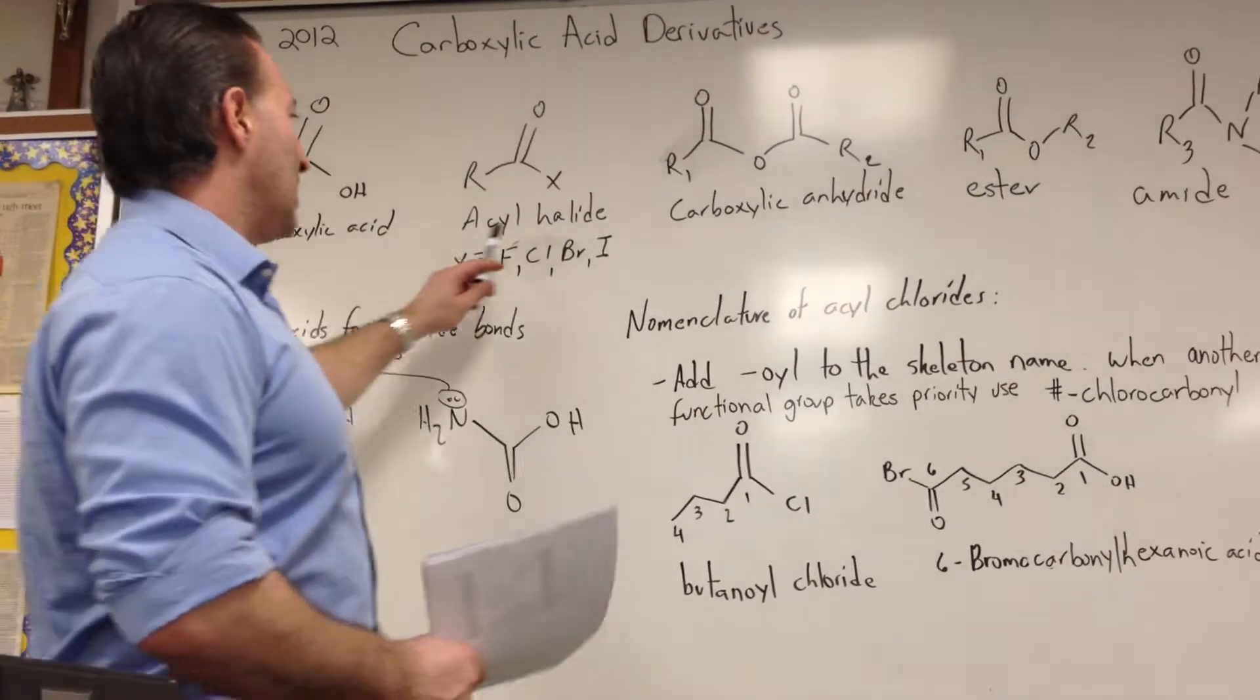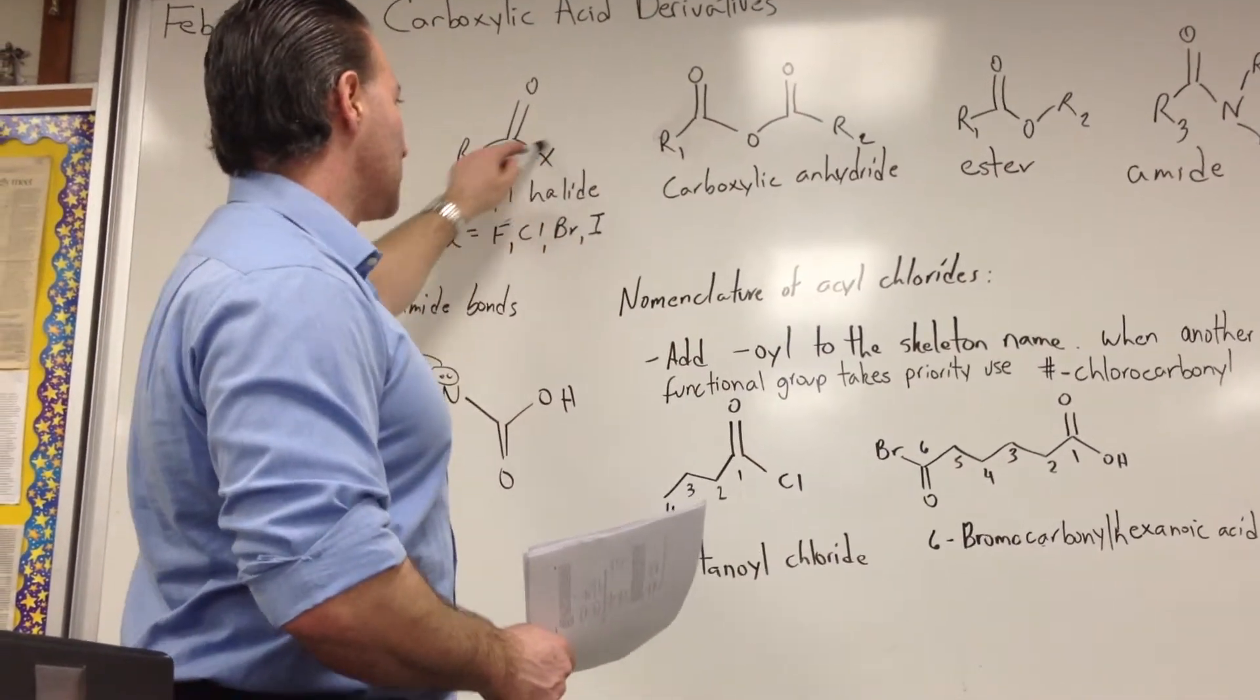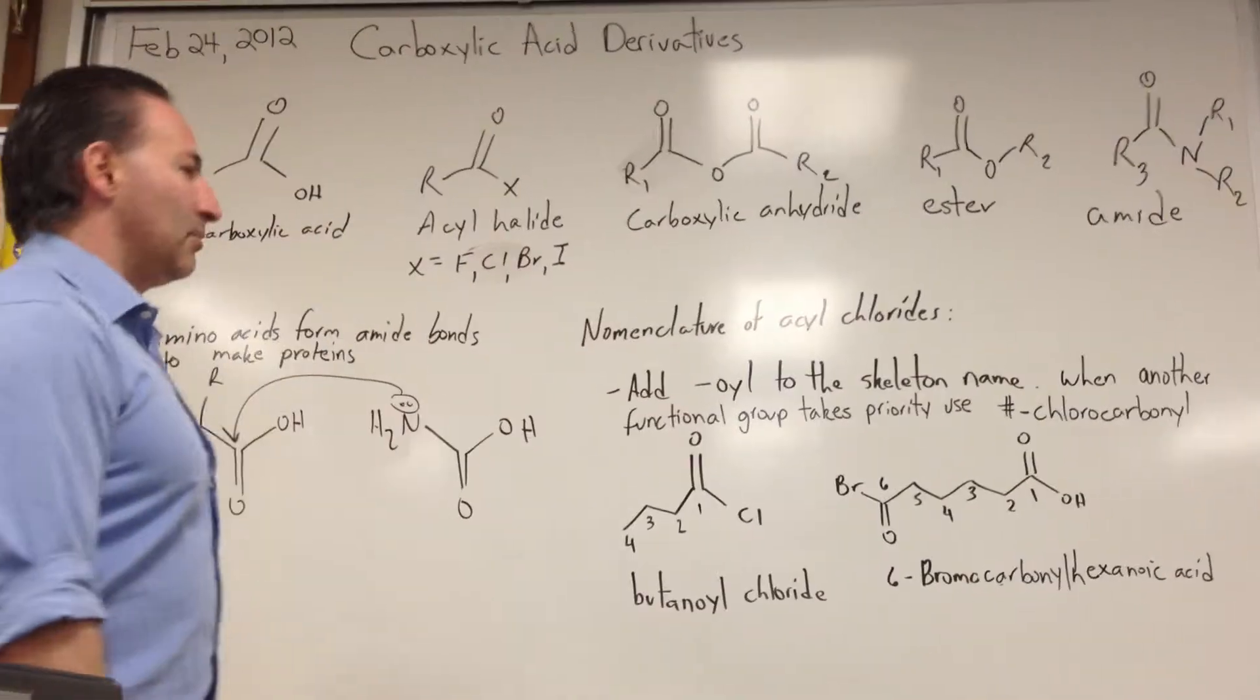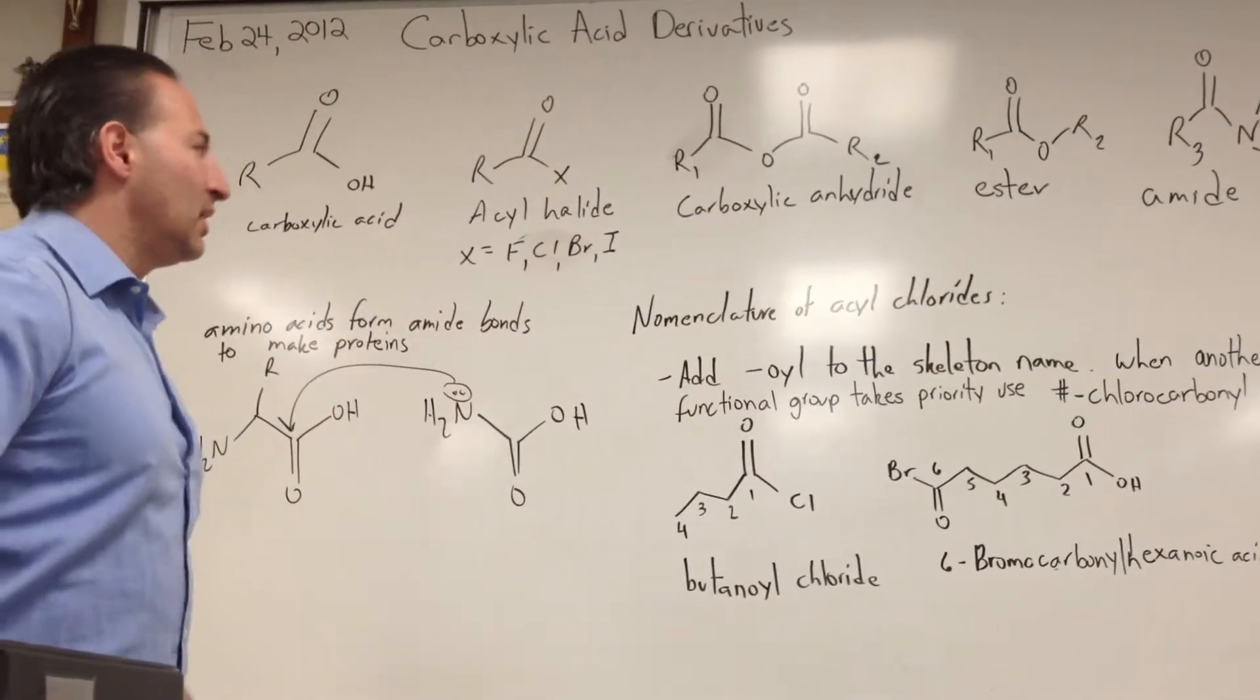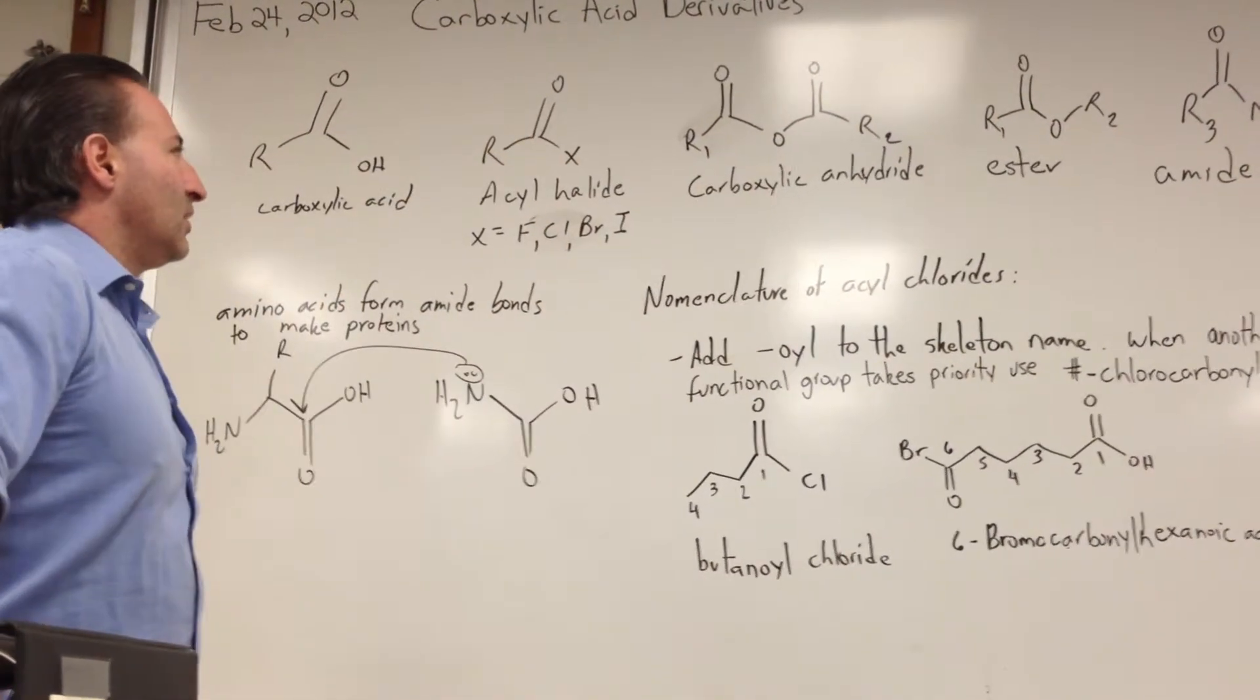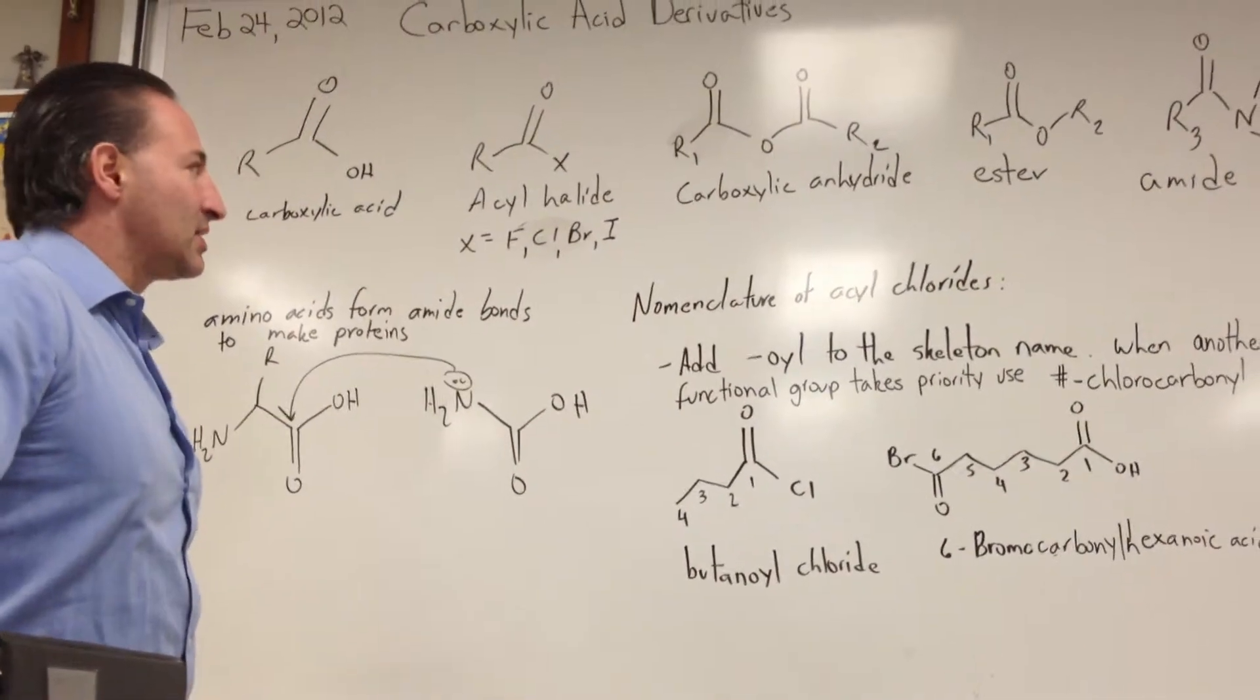We have acyl halides that can have fluorine, chlorine, bromine, or iodine in this position. They're used very often as synthetic intermediates. For example, billions of kilograms of the iodine-containing form of this acetic acid derivative are used every year to make acetic acid.